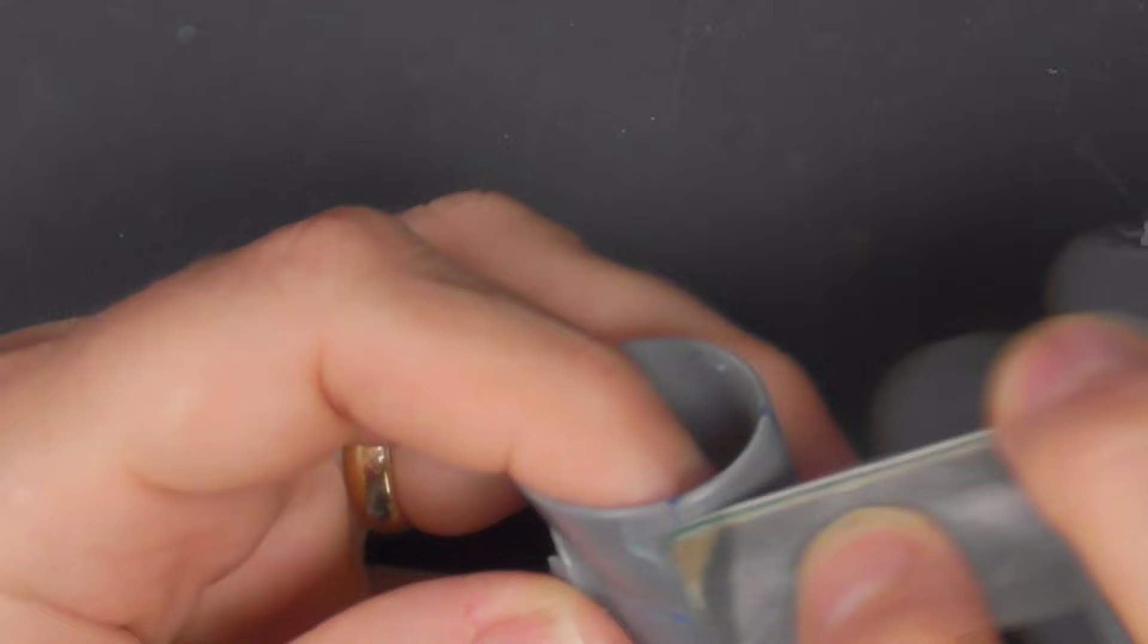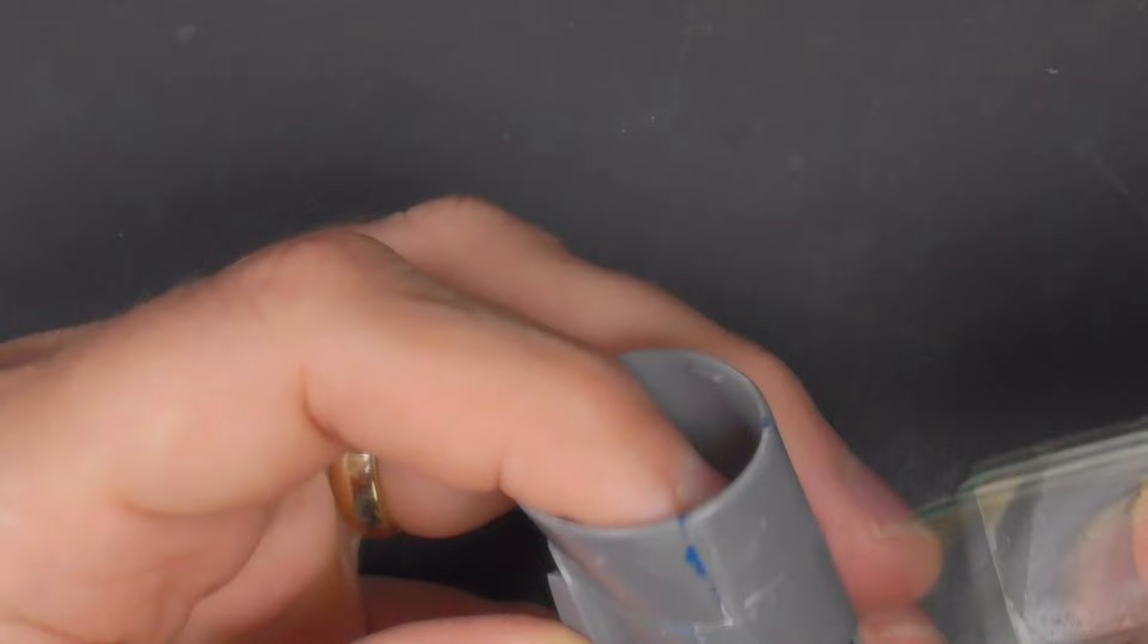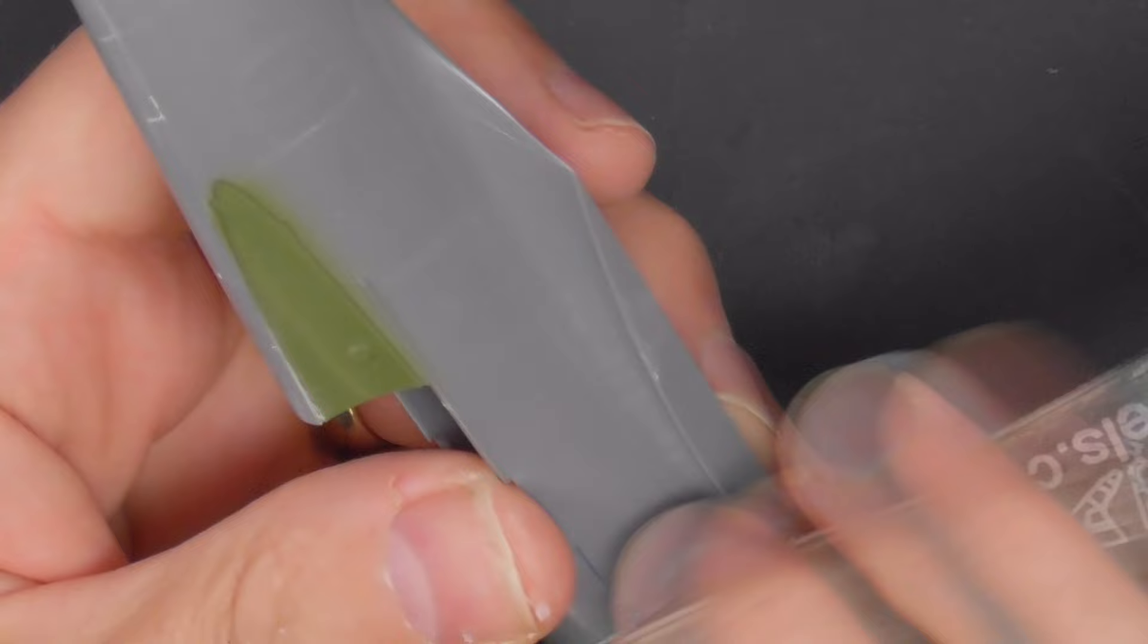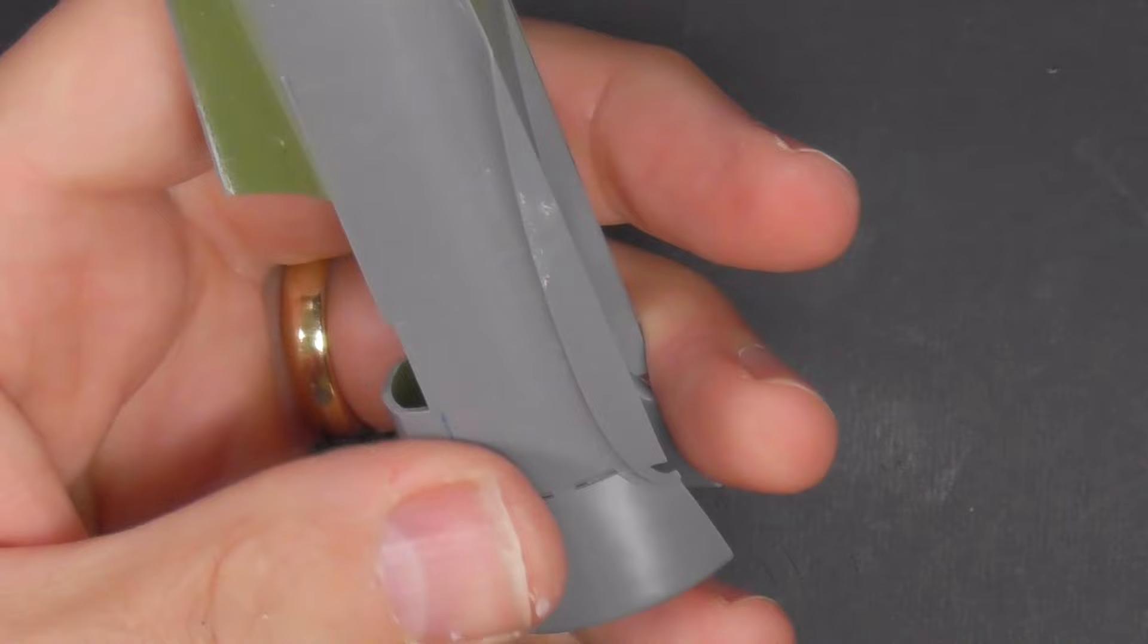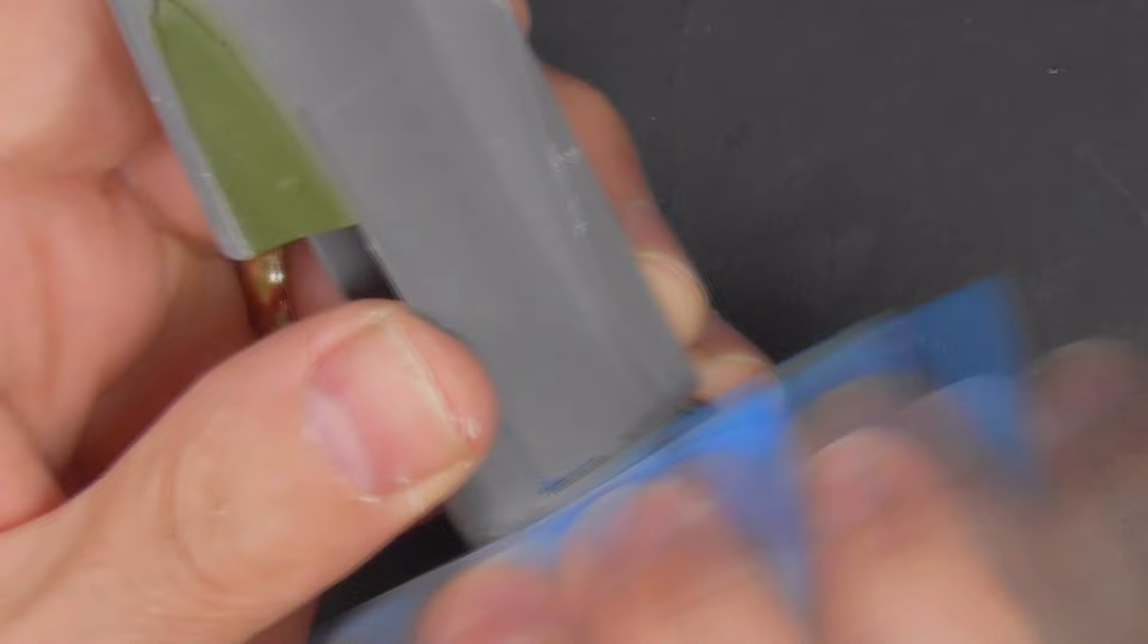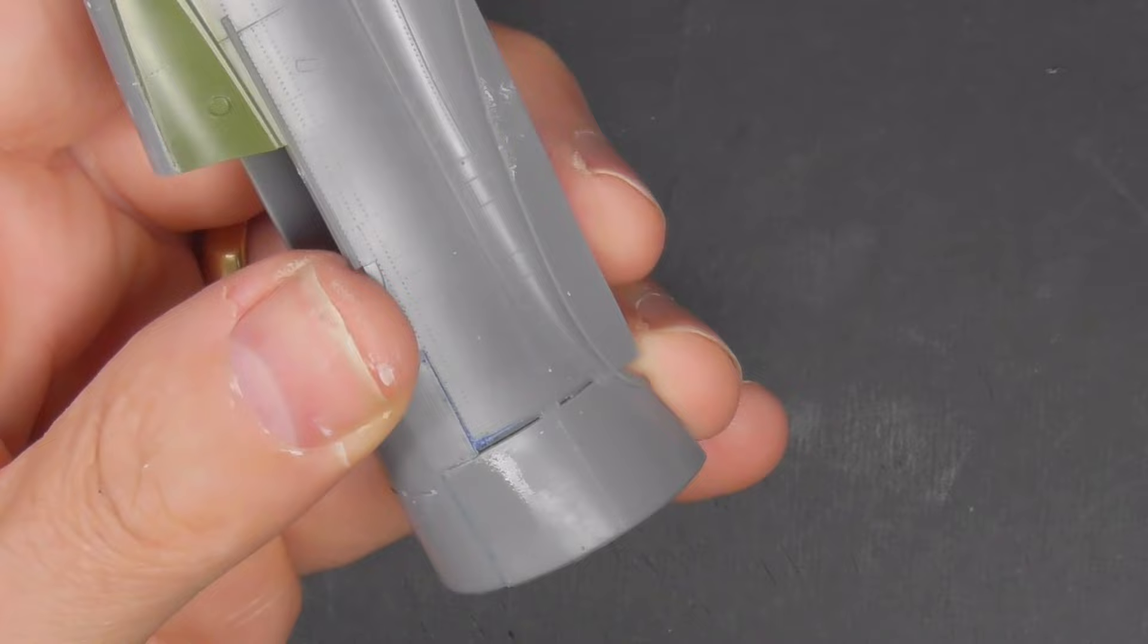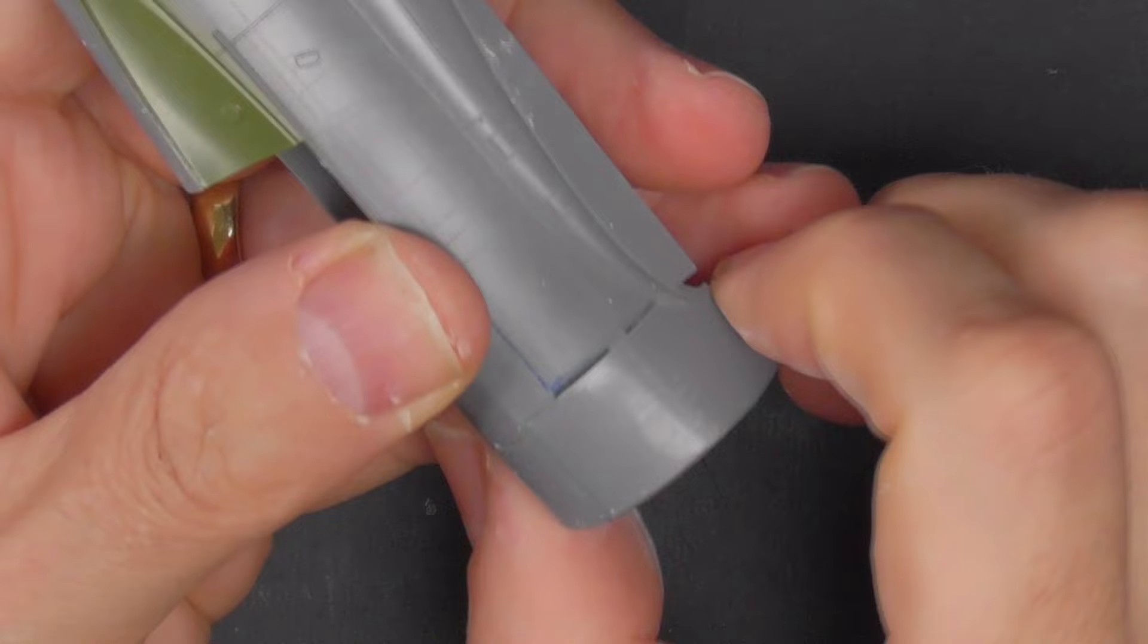A harder sanding stick now—this is so I can match the contours. As you saw before, I was very careful trying to line it up, but nothing's perfect in this world. I've got a slight step, but that's really easily resolved by just sanding everything flush. The advantage of that sanding pad stuff is it will conform, so you're not going to end up with a flat spot or anything.